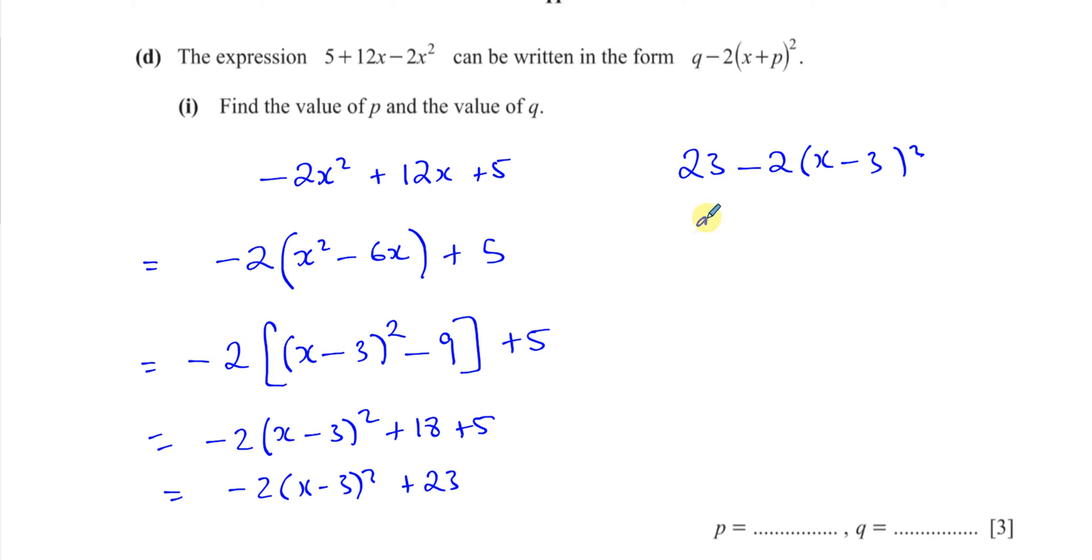So we can see here that q is equal to 23 and the p is equal to negative 3. p is equal to -3. So p equals -3 and q is 23. Those are the values of p and of q in this question.